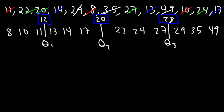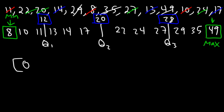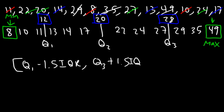The minimum value is the lowest value in the data set, which is 8, and the maximum value is the highest, which is 49. Now we need to check to make sure these two values are not outliers, because if they're outliers they're not going to be part of the box and whisker plot — they will exist outside of it. We need to determine a range of numbers: Q1 minus 1.5 times the IQR to Q3 plus 1.5 times the IQR. Any number outside this range is an outlier.